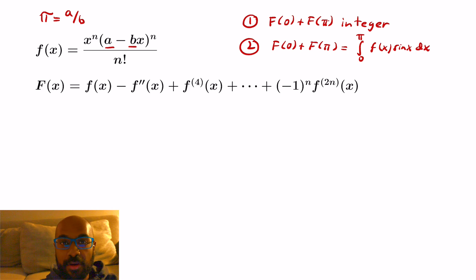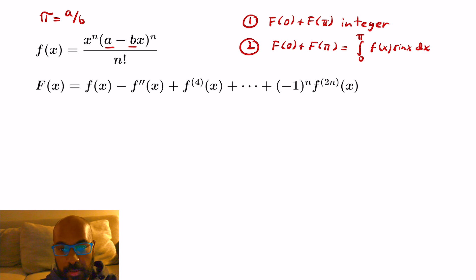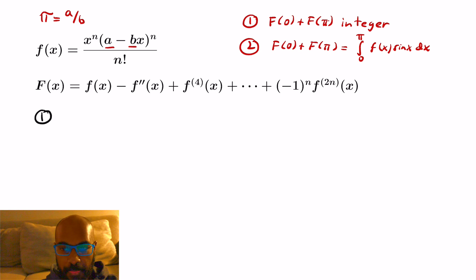These two claims together are going to cause problems with the assumption that pi is rational. We'll get a contradiction by showing that the integral in the second claim can be made arbitrarily small, which is impossible if capital F of 0 plus capital F of pi is actually a positive integer. So let's start by proving that capital F of 0 plus capital F of pi is an integer.